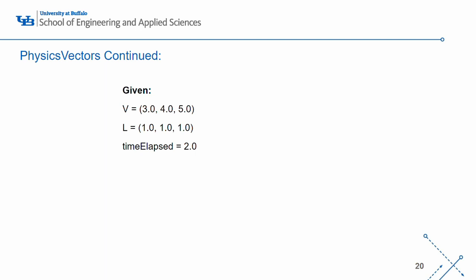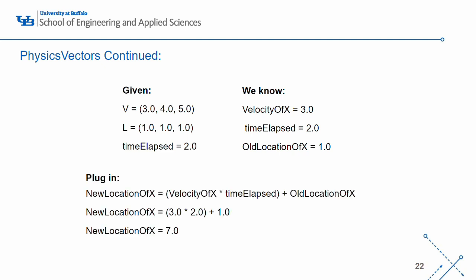So, it's time for another example. Let's use the same velocity vector that we had before, v equals (3,4,5). Now, let's say that we have a location vector of (1,1,1), and the time elapsed that is being passed to us is 2. Let's first find the object's new x location. So, we know that the velocity of x is 3, the time elapsed is 2, and the old location of x is 1. So, we plug these values into the equation. New location of x equals velocity of x times time elapsed plus old location of x, and that will give us the new location of x is equal to 7. Now, you have the new x location of the object and can update the object.